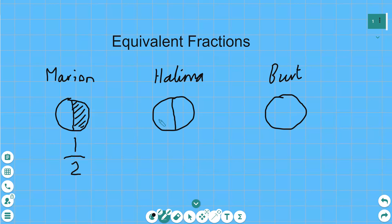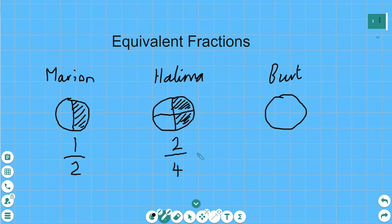Halima likes chopping pizza, so she chops her pizza into four pieces, or quarters. So when we do the fraction for Halima's pizza, we put four on the bottom. Now she eats two of the slices — two quarters, shaded in here — so two goes on the top in the numerator position of her fraction. She's eaten two quarters.